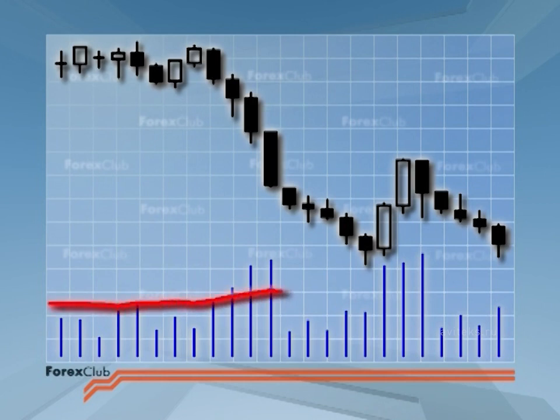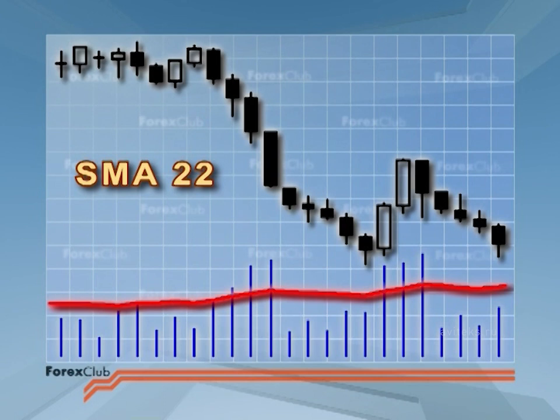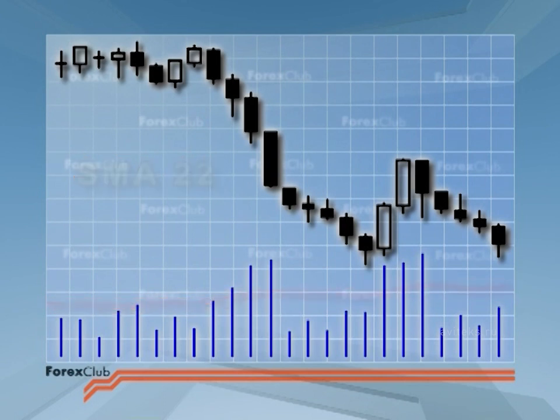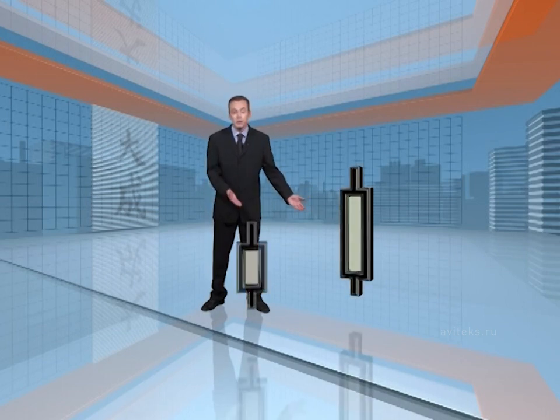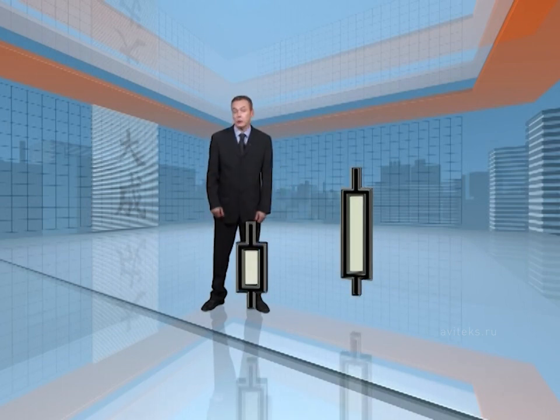For example, for daily candlesticks you could average over 22 days which is the trading month or 65 days which is a quarter. Personally, I let my eye be the judge and if a candlestick looks longer than the average, it's long and if it looks shorter than the average, it's short.